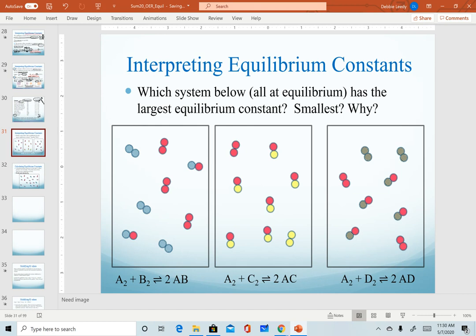To make sure we know how to interpret small and large k values, we have a practice question here. In all of these, we're showing the same type of reaction, taking two diatomic elements, combining them together. What I want you to do is to determine which of these systems is showing the largest equilibrium constant, and which one is showing the smallest, and why. Pause the video to answer this question. When you have an answer, unpause it, and we will finish this in our next slide.